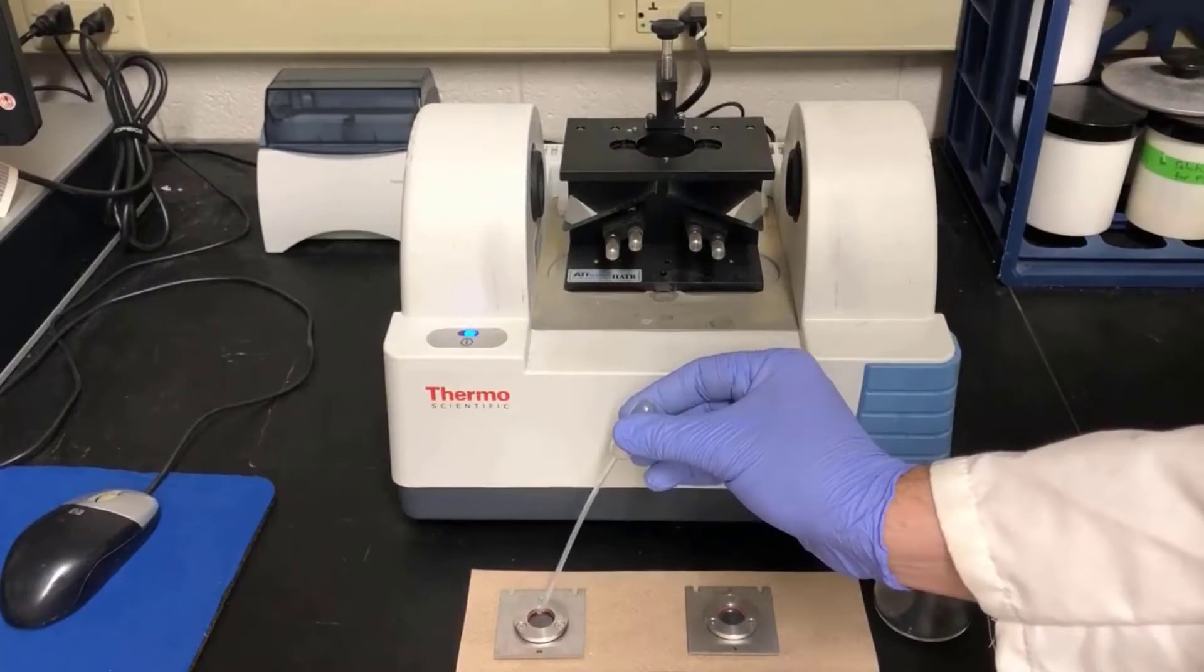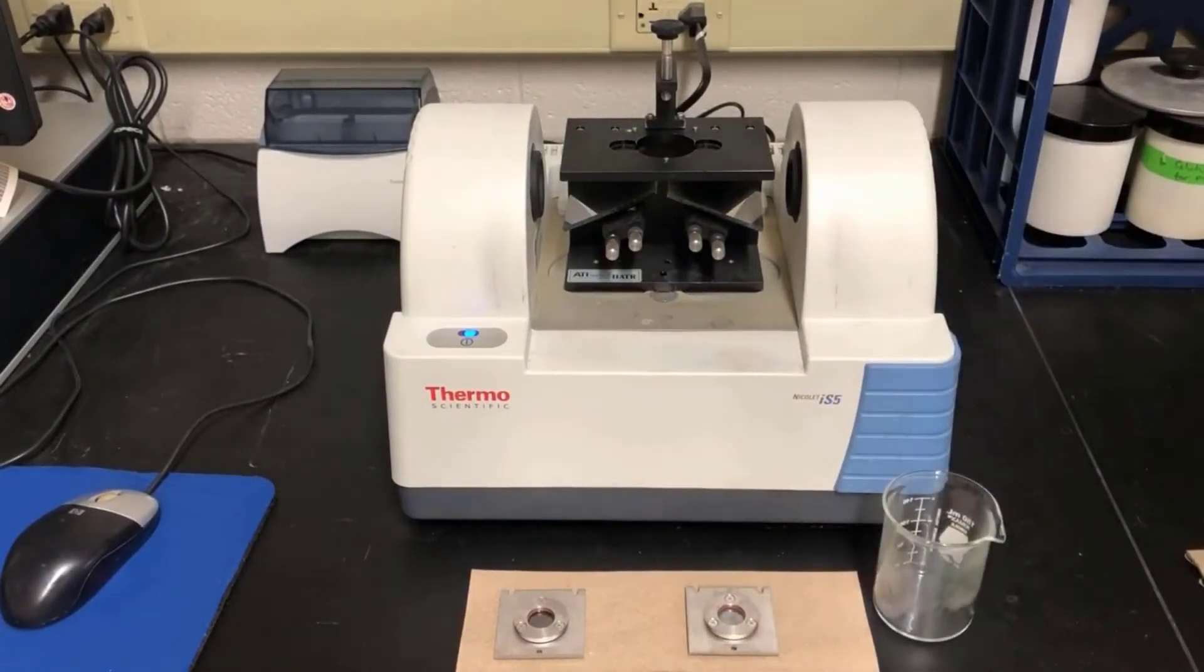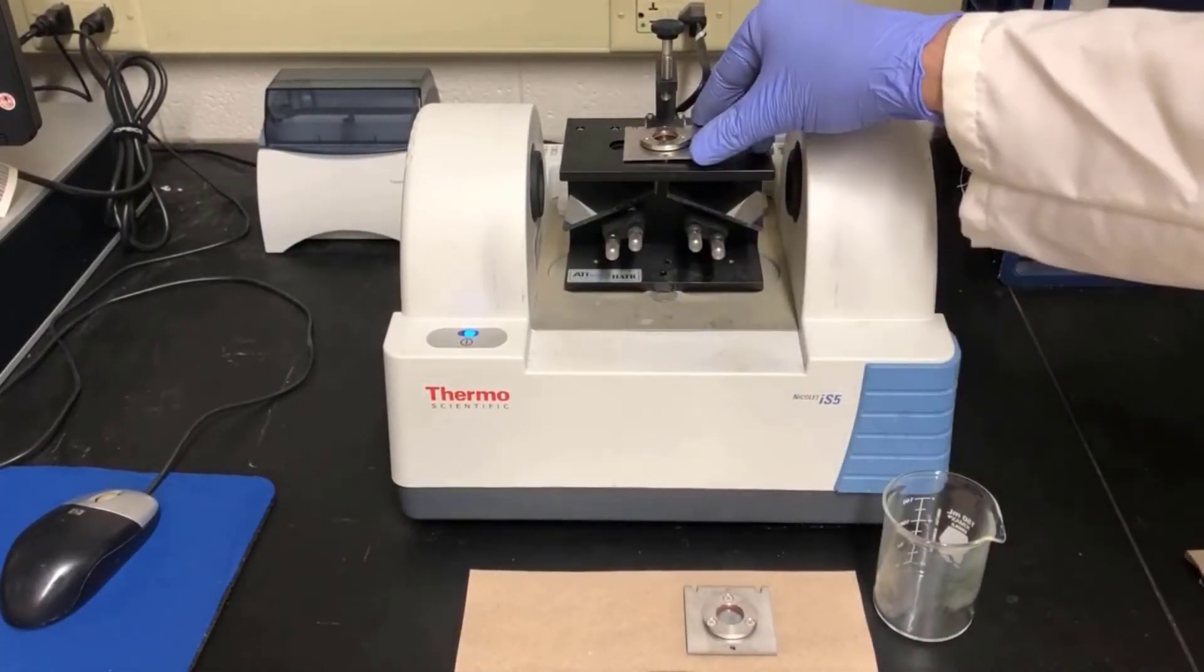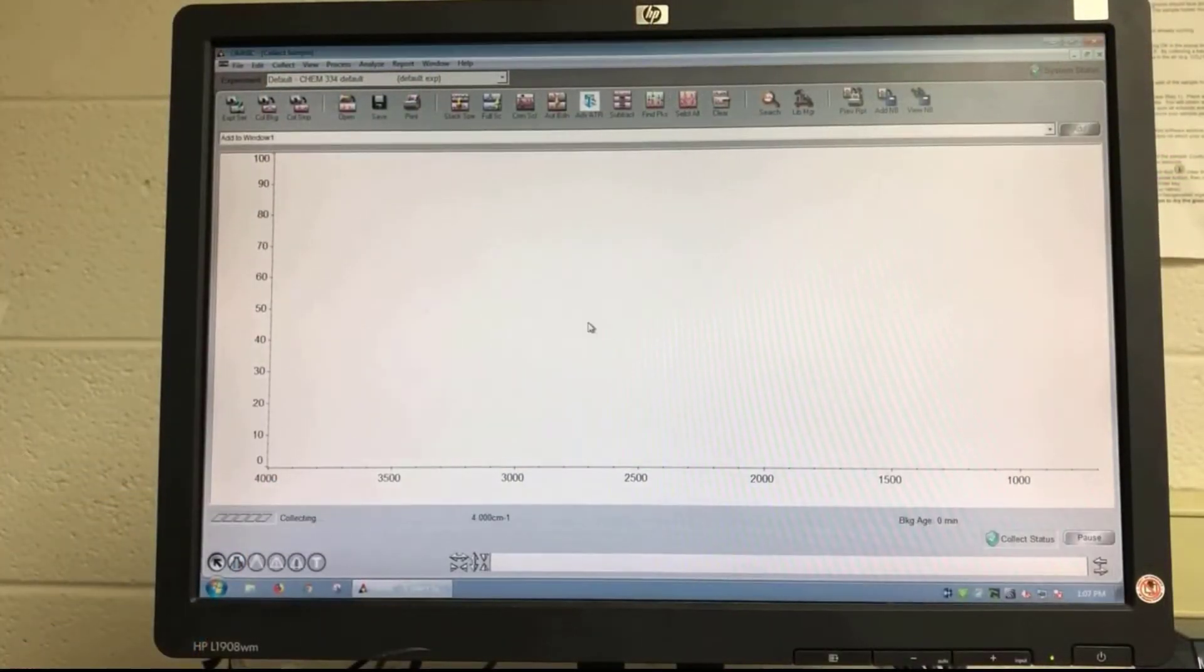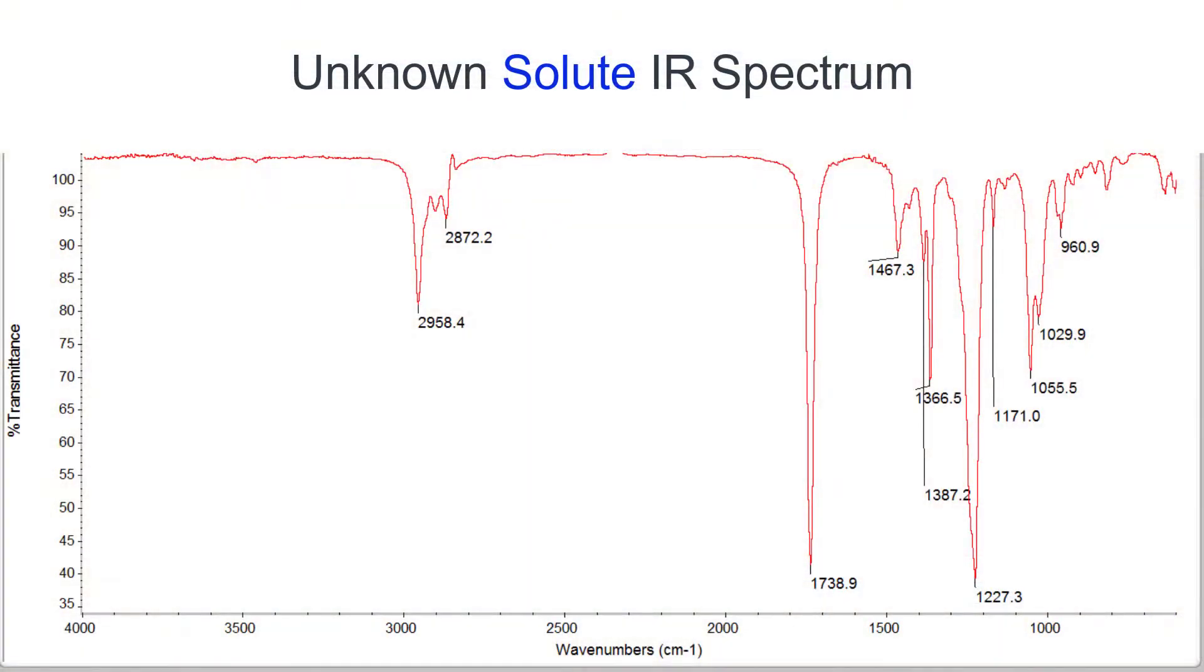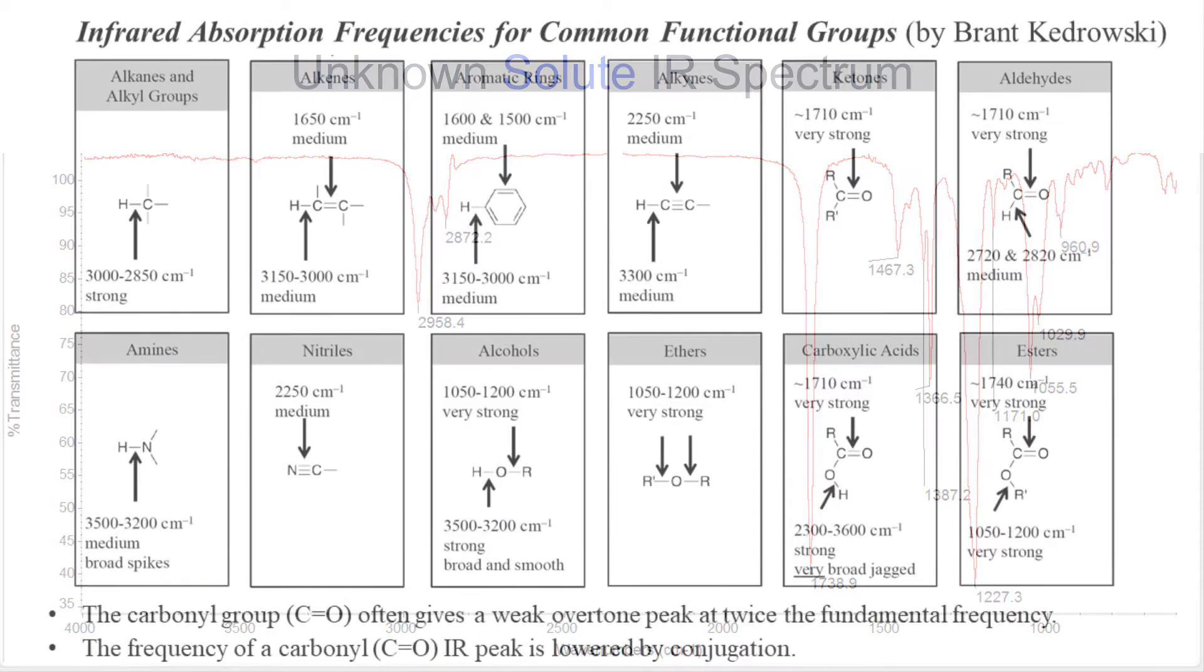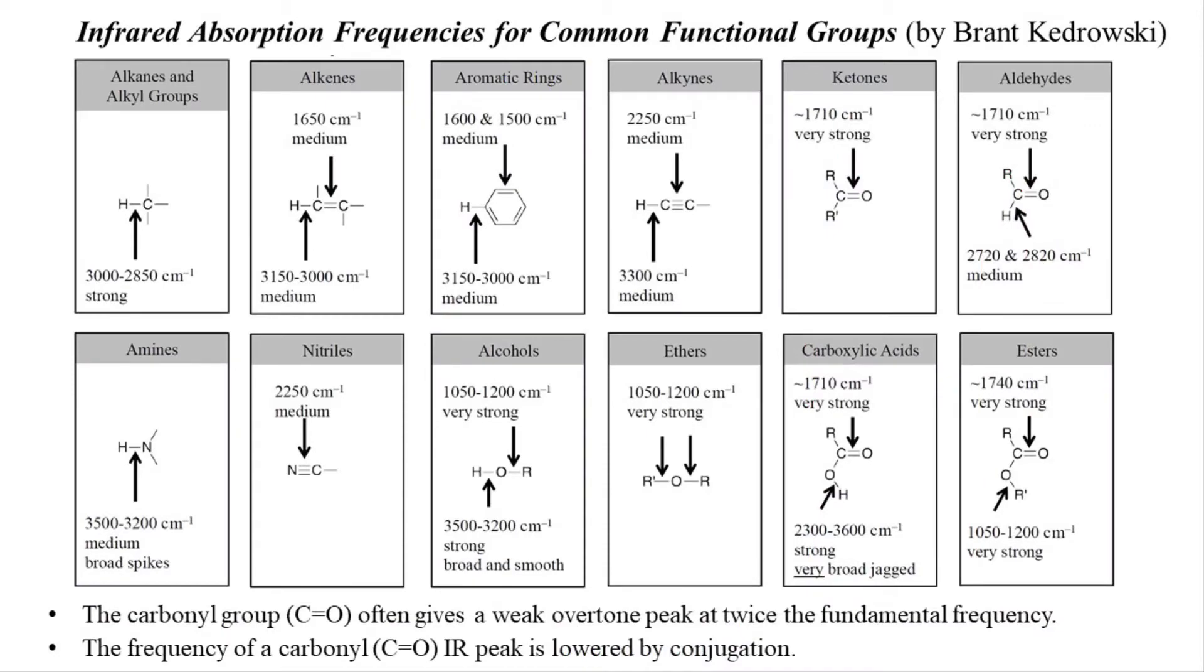Now, I'll acquire an IR spectrum on my unknown solute by putting a little bit on one of these ATR crystal plates and putting it on the IR spectrometer. Then, I'll start collecting data using the OMNIC software. And here's a high-resolution IR spectrum of the unknown solute in this example video. Interpret this spectrum to identify the major functional group that's present in the unknown solute. You can use the following table of IR peak frequencies to help you do that.